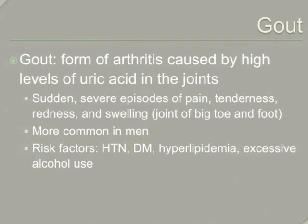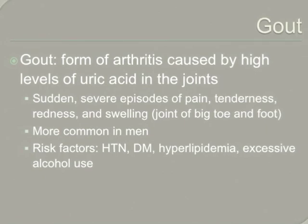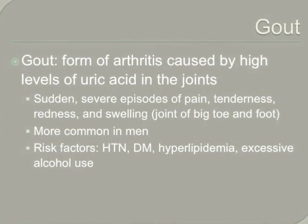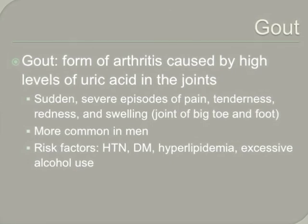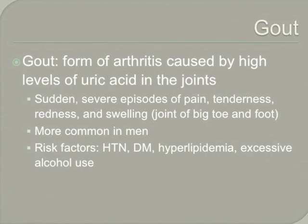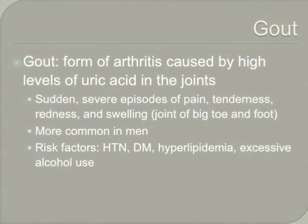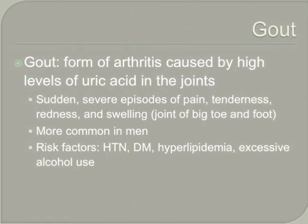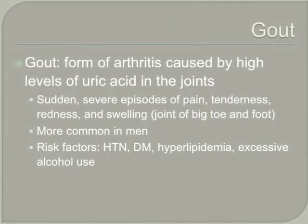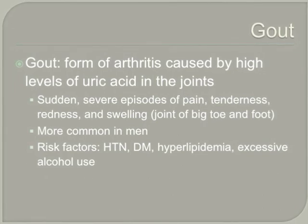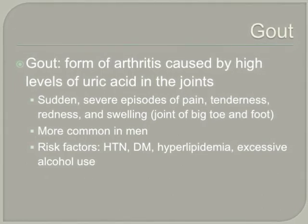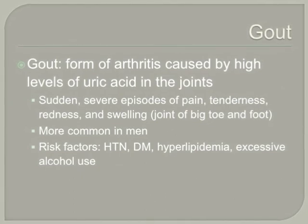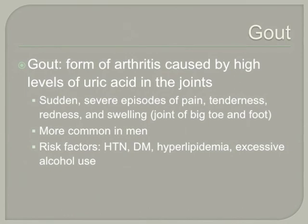Gout is a form of inflammatory arthritis that develops in people who have high levels of uric acid in the blood. Uric acid can form needle-like crystals in the joint and cause sudden severe episodes of pain, tenderness, redness, swelling, and warmth. For some, the first symptom of gout is excruciating pain and swelling in the big toe. Gout can also appear in the ankle, foot, and knees. According to the Arthritis Foundation, gout occurs in about four percent of American adults — about six million men and two million women.